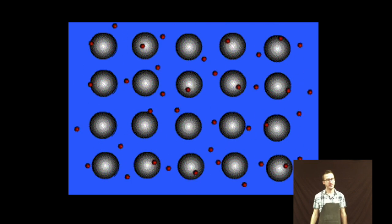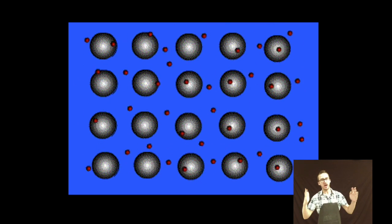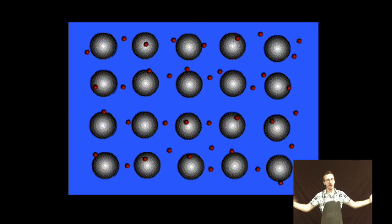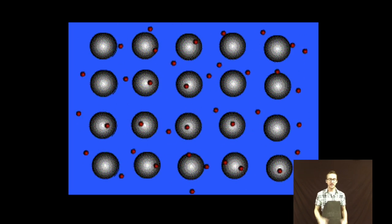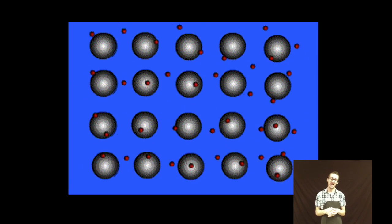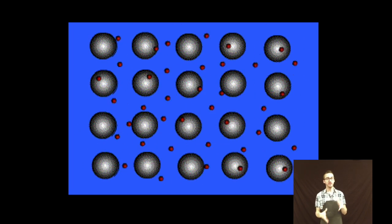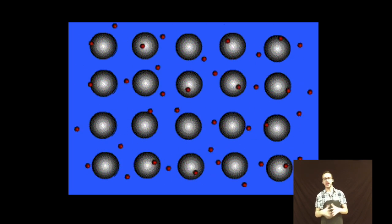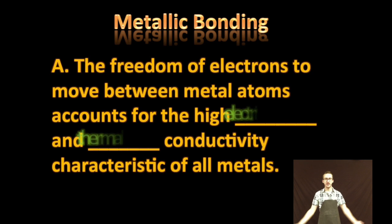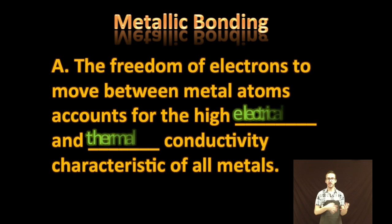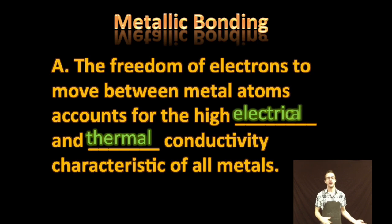Essentially, the electrons are said to be delocalized, which means that they do not belong to any one atom but move freely about the entire metal's network of empty valence level orbitals — that's metallic bonding, the sea of electrons. And it's this electron sea model that contributes to many unique properties we see in metals. For example, the freedom of electrons to move between metal atoms accounts for the very high electrical and thermal conductivity that is characteristic of all metals.